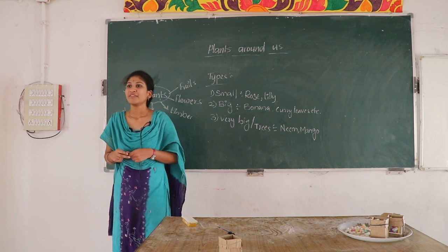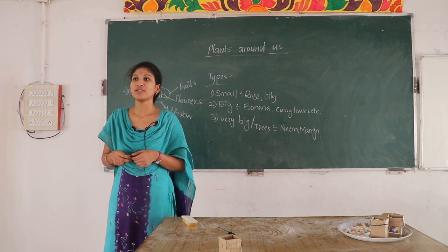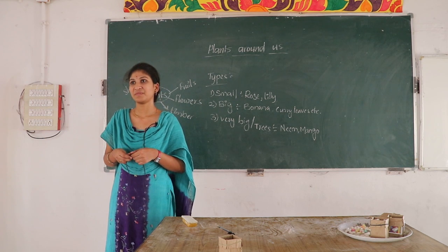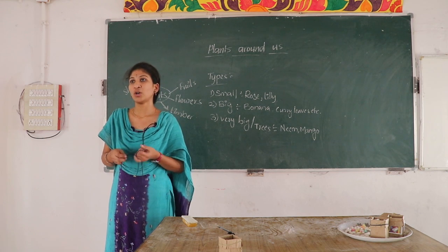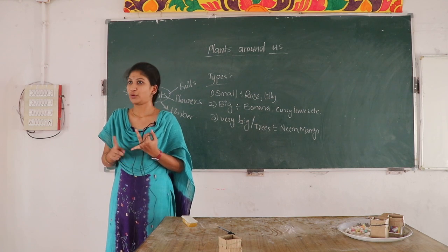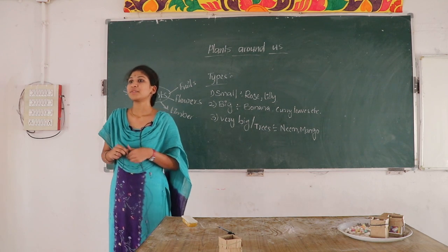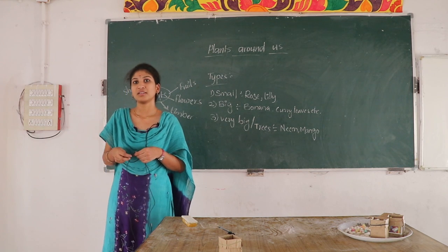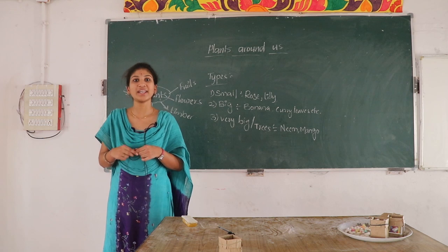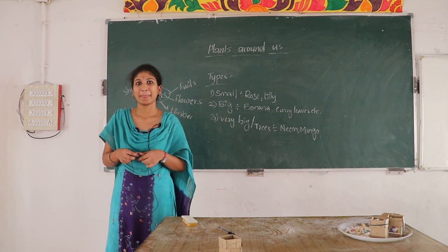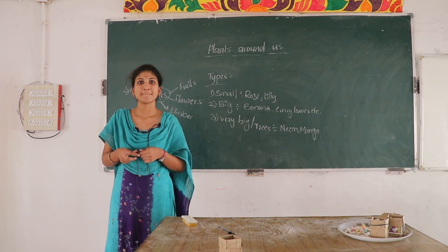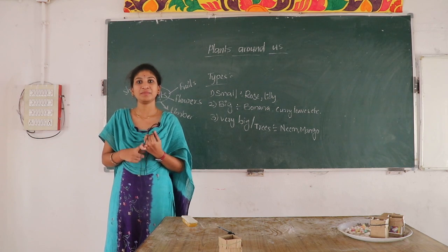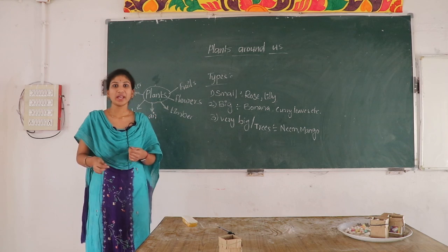Which plants give fruits to us? Mango, orange. Which plants give timber to us? Teak, neem, etc.